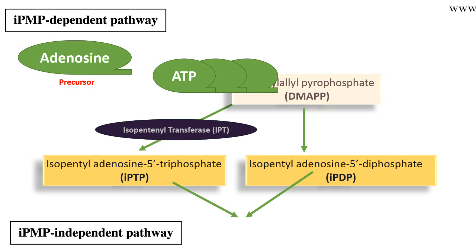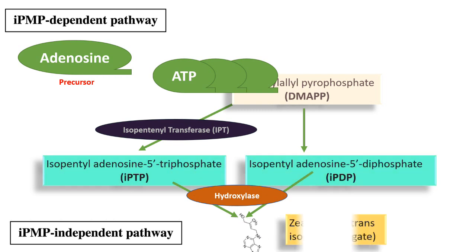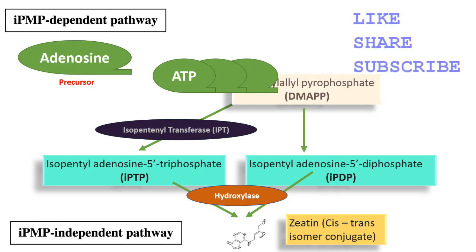In both cases, whether it produces IPDP or IPTP, both of them can be converted by the enzyme hydrolase into the naturally occurring cytokinin, zeatin, which is normally found as a cis-trans conjugate in plant cells.